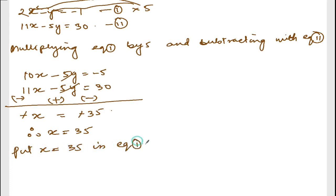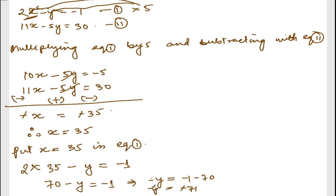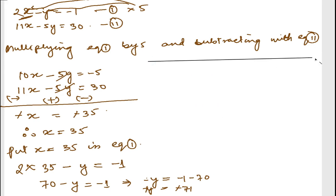Now put x = 35 into equation number one: 2(35) - y = -1, so 70 - y = -1. Transfer 70 to the right: -y = -1 - 70 = -71. The negatives cancel, so y = 71.